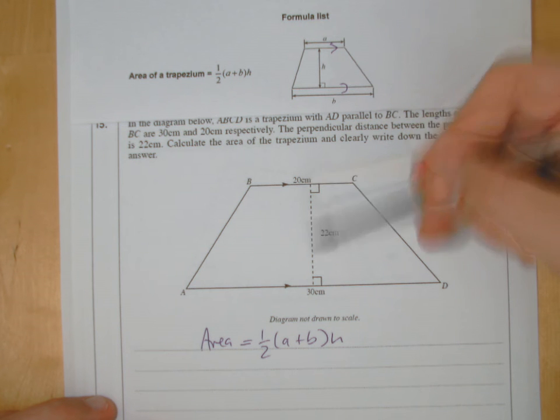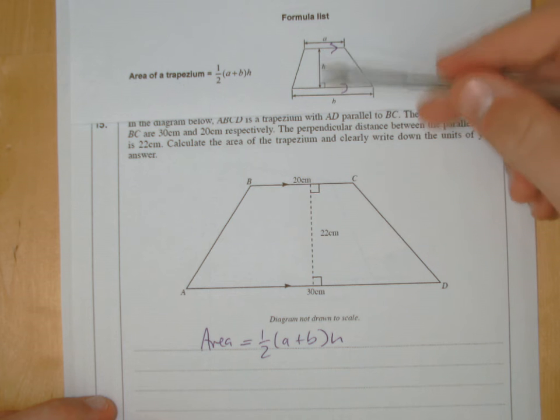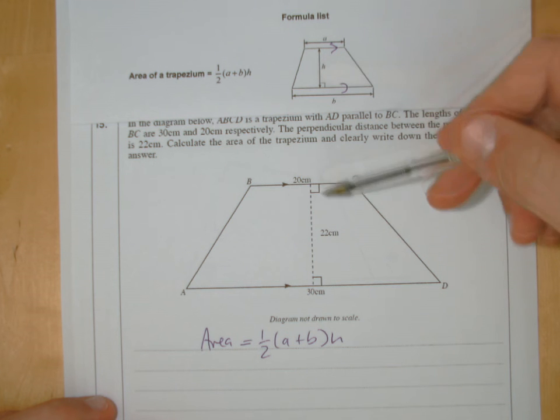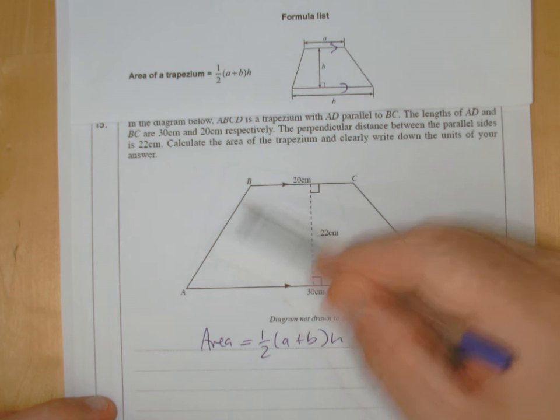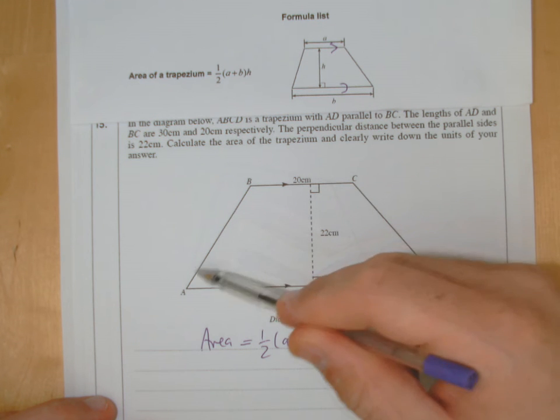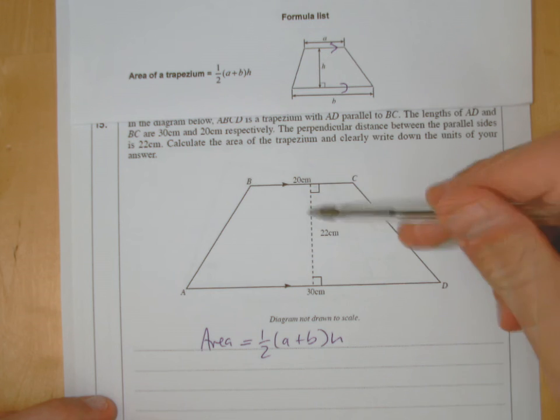So in this case, your A and B will be these two sides here, 20 and 30. And your H is the perpendicular distance between them. So this distance here where the right angle is. These are no good, because they're not perpendicular. They're on a slant. So ignore these, and if they gave the measurements here, this is the one you want.